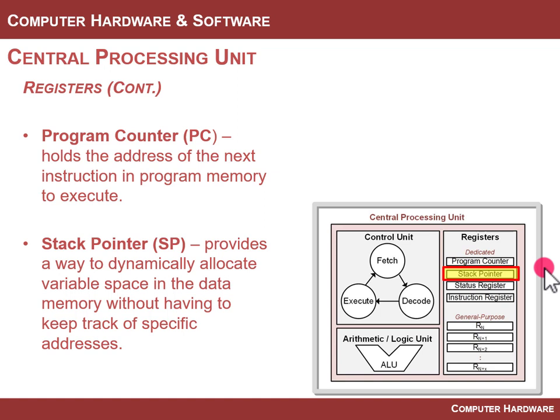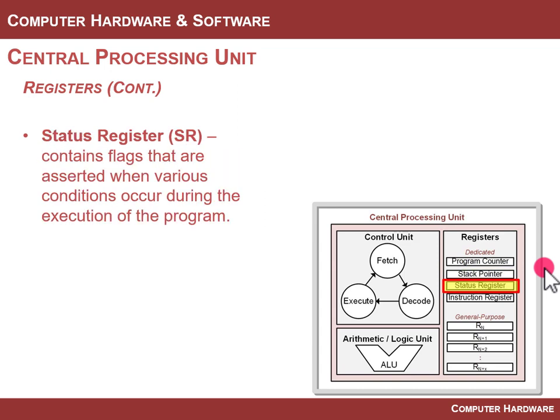The stack pointer allows you to dynamically allocate variables in data memory. It's another address register — it holds an address pointing to a portion of data memory — which allows you to dynamically store and retrieve information. We use terms like push and pop: you push information onto the stack and pop information off. The stack pointer tracks where you pushed your last piece of information and moves to the prior location when you pop, dynamically tracking where data is being pushed and popped.